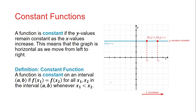And then a function is constant if the y values remain constant as the x values increase. This means that the graph is horizontal as we move from left to right. If we have a line through y equals c, the two points x1, f(x1) and x2, f(x2) share the same y value c — there is no change. The function is constant on an interval a to b if f(x1) equals f(x2) for all x1, x2 in the interval a to b whenever x1 is less than x2.